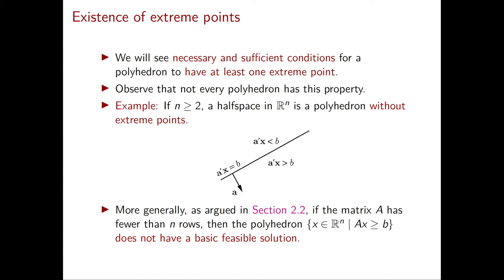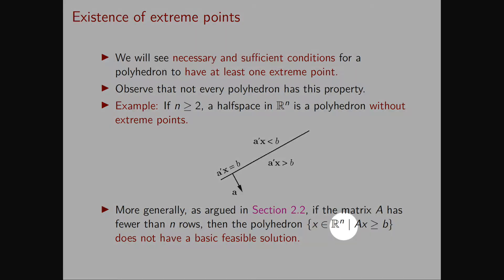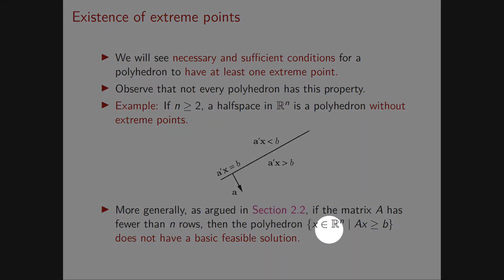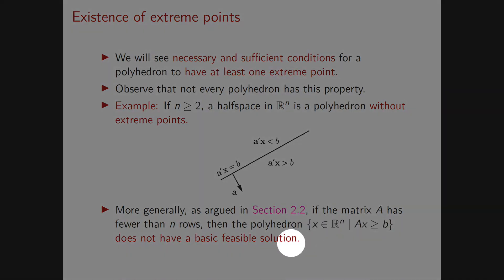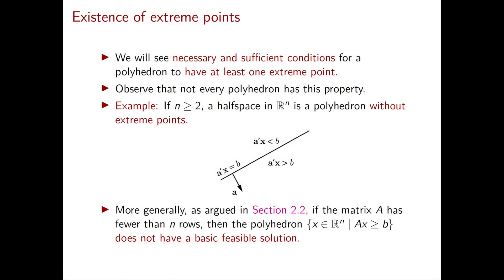There are several ways to show this, using the different definitions of a vertex, extreme point, and basic feasible solution. A simple way to see that the half space doesn't have any extreme points is to use the definition of basic feasible solution. Since our polyhedron is defined by only one inequality constraint, there is clearly no basic solution at all, because that requires the existence of two linearly independent inequality constraints. More generally, if we have any polyhedron in Rn defined by Ax ≥ B where A has fewer than n rows, then this polyhedron cannot have any basic feasible solution, since the definition requires n linearly independent rows.